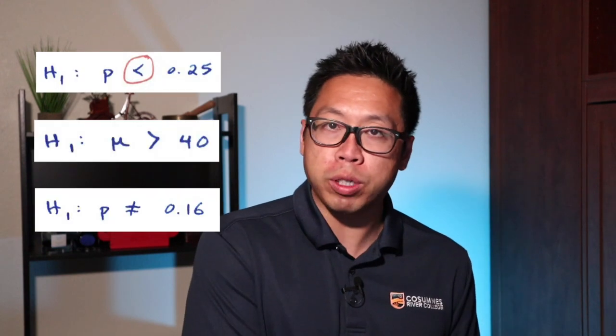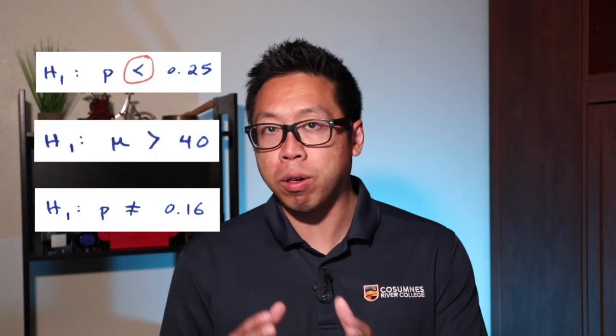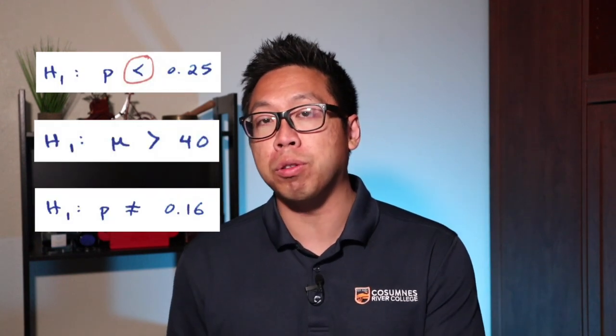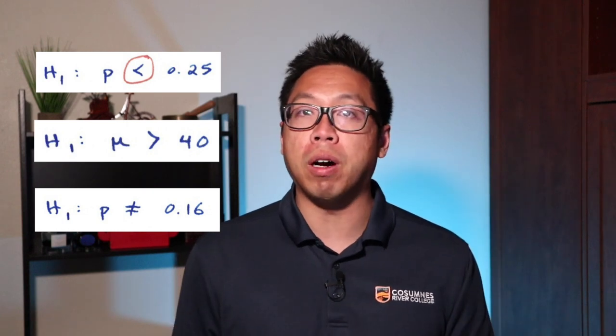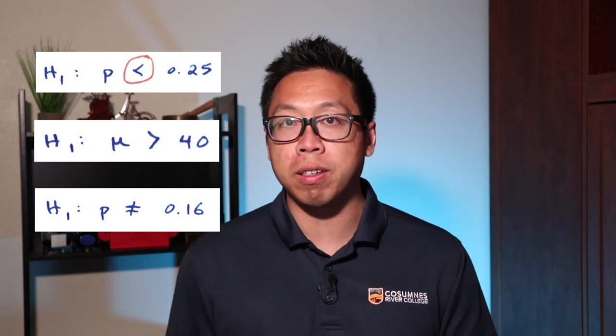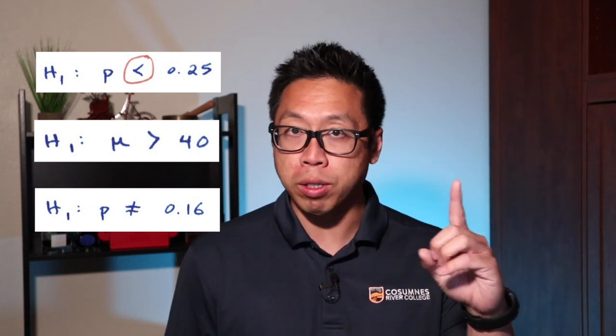In the last lecture, we introduced the idea of hypothesis testing. In all the examples we talked about, we took a sample, and from that sample, we wanted to know whether there was enough evidence to conclude that either the mean or proportion is less than, greater than, or not equal to a single number. Those are all examples of hypothesis tests involving one sample.